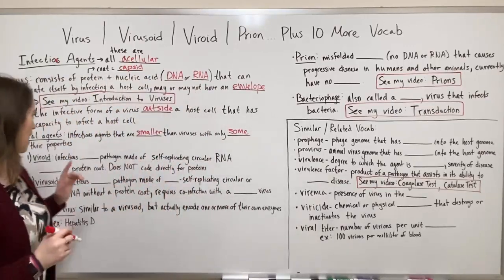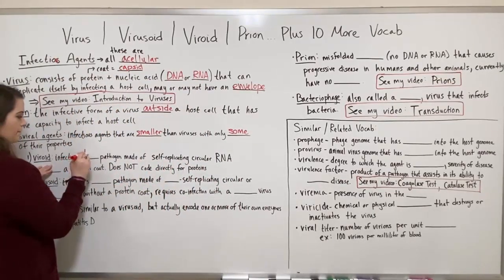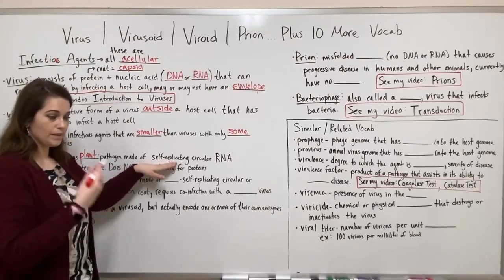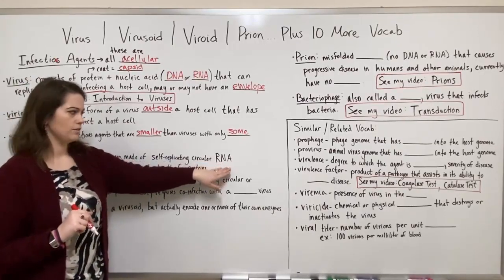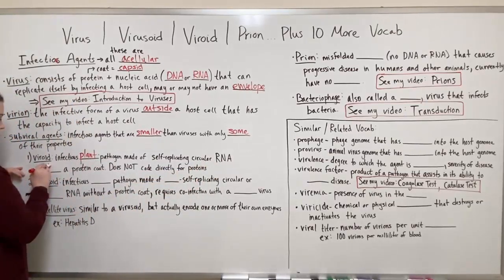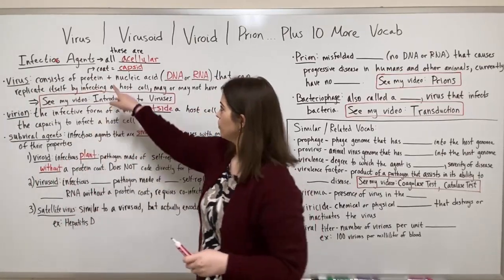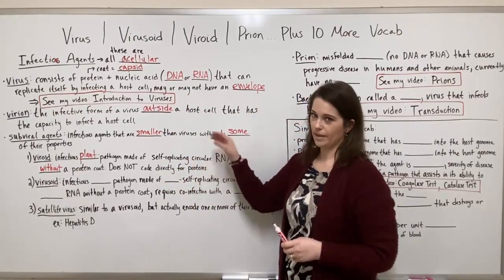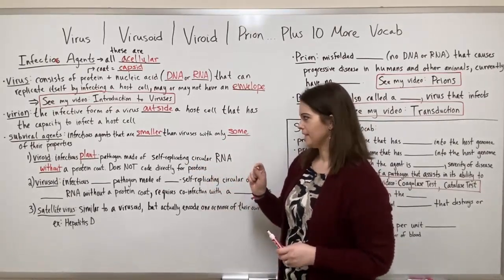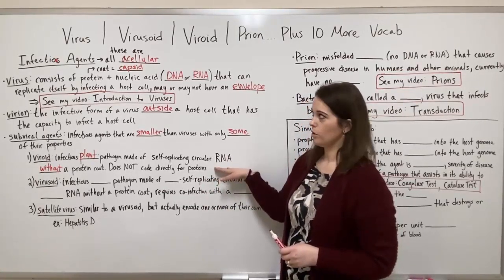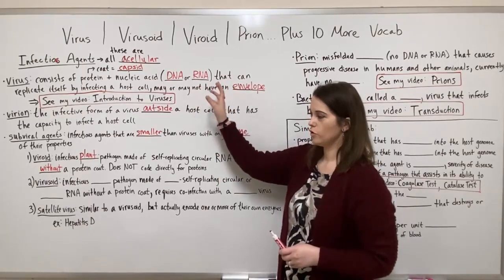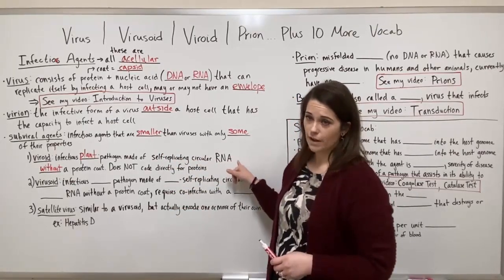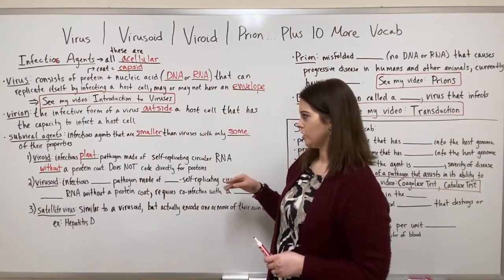The first sub-viral agent is the viroid. Viroids are known for infecting plants — they are infectious plant pathogens. A viroid is made of self-replicating circular RNA, without a protein coat. It does not code directly for proteins, unlike a full virus which codes for coat proteins and sometimes its own enzymes. There are many different kinds of viroids; if you Google viroids you'll find a long list of plant pathogen examples.